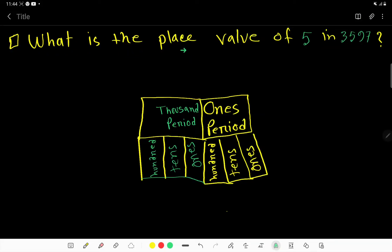What is the place value of 5 in this number 3597? Let's get started. So this is our number.